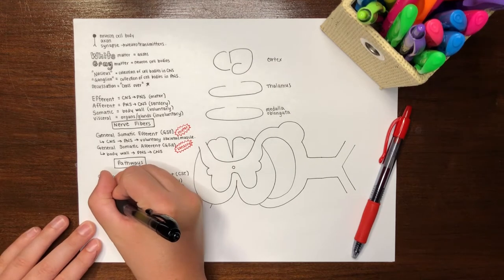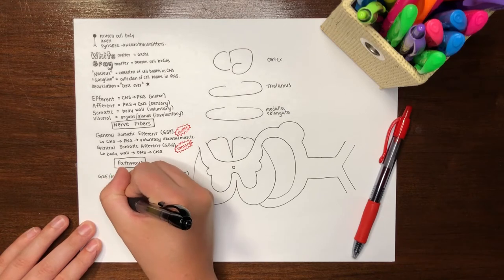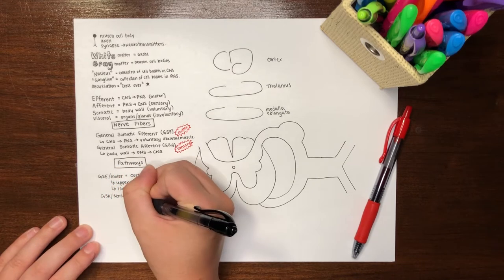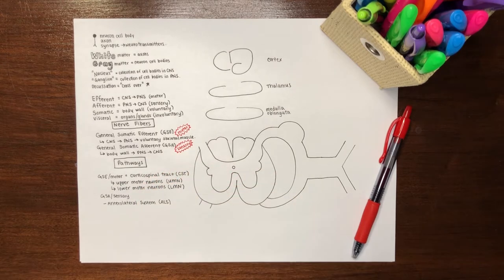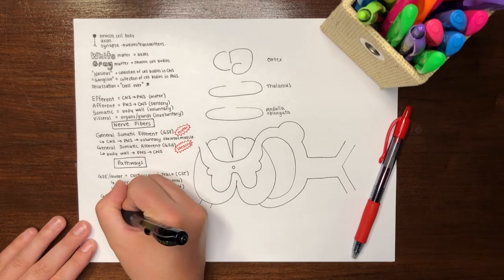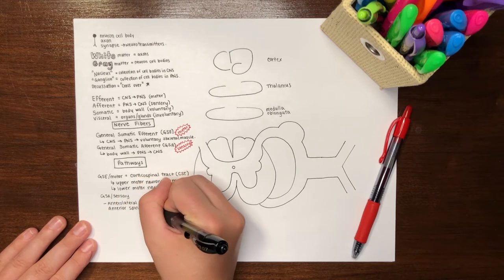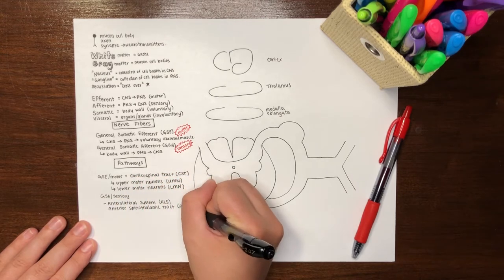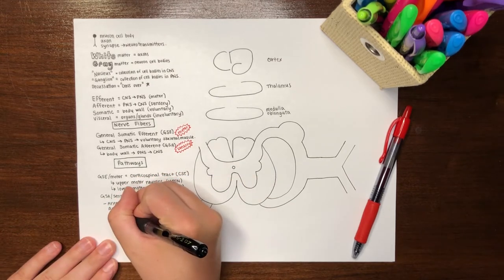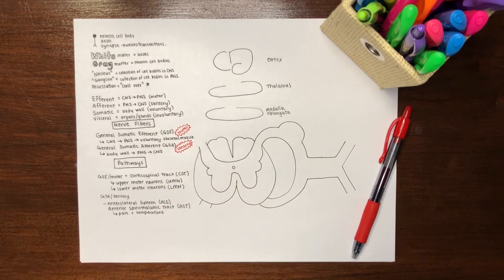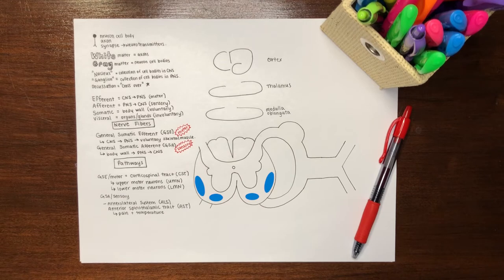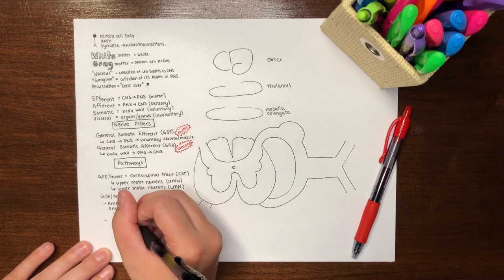The second type of nerve fibers discussed in this video, GSA sensory neurons, exist in two discrete pathways. The first pathway is the anterolateral system, abbreviated ALS, also called the anterior spinothalamic tract, abbreviated AST. These neurons carry pain and temperature information from the body wall to the spinal cord and brain for processing and reflex development. In the spinal cord, this tract is located in the anterior lateral white matter on each side at approximately this location.